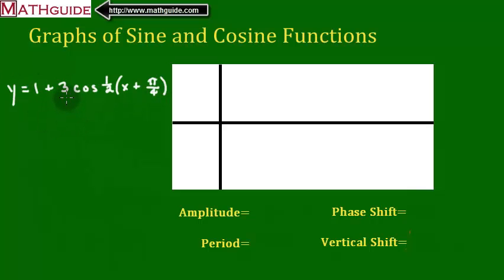This number that's in front of the cosine curve, we've seen this before. We're going to use it to calculate amplitude. The value that's in front of the angle - everything in the parentheses here is our angle - is going to help us calculate the period of this curve.